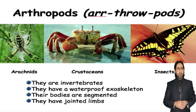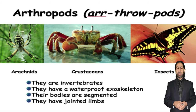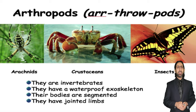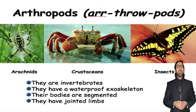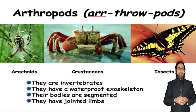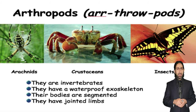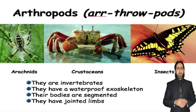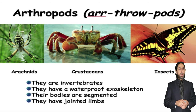Arthropods include arachnids, crustaceans, insects, and myriapods. They are all invertebrates. They have a waterproof exoskeleton, segmented bodies, and jointed limbs. That is why they are named arthropods — 'arthro' means joint and 'pod' means leg in Latin, so arthropods means jointed legs.